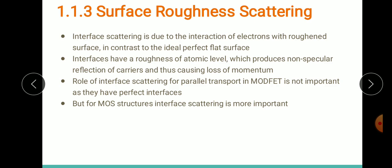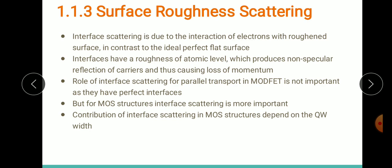In MOS structures the oxide layer is grown thermally, and as a result the interface is not perfect — we have roughness at the interface. In MOS structures the interface scattering depends upon the width of the quantum well. As the width decreases, the electron wave functions penetrate deeper into the oxide-semiconductor barrier. As more electrons are exposed to the interface roughness, scattering increases, which is the reason for the decrease in mobility at a particular gate voltage.